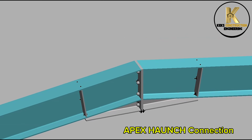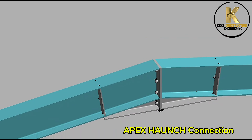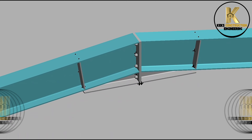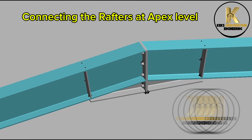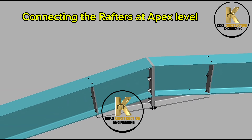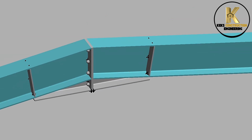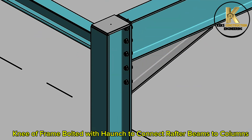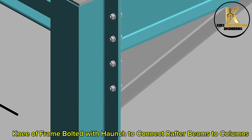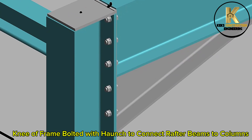Apex haunch connection, connecting the rafters at apex level. Knee of frame bolted with haunch to connect rafter beams to columns.